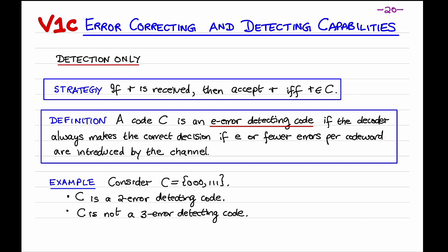Here's a toy example. Let's look at the code C that has two codewords, 000 and 111. Then C is a two-error-detecting code, but C is not a three-error-detecting code. To justify the first claim, note that if either 000 or 111 is transmitted and either 0, 1, or 2 symbols are flipped, then what is received is not a codeword. This is because the distance between the two codewords is 3, which shows that C is a two-error-detecting code.